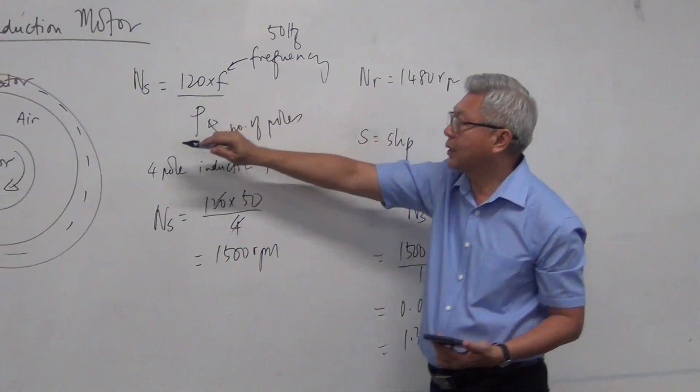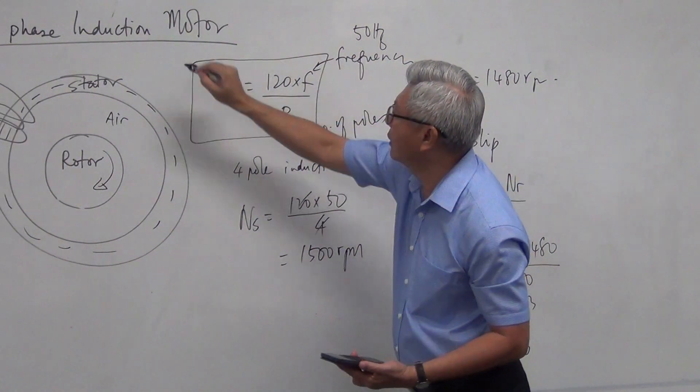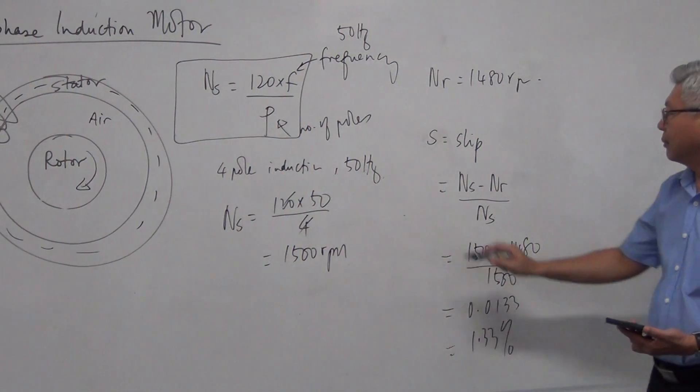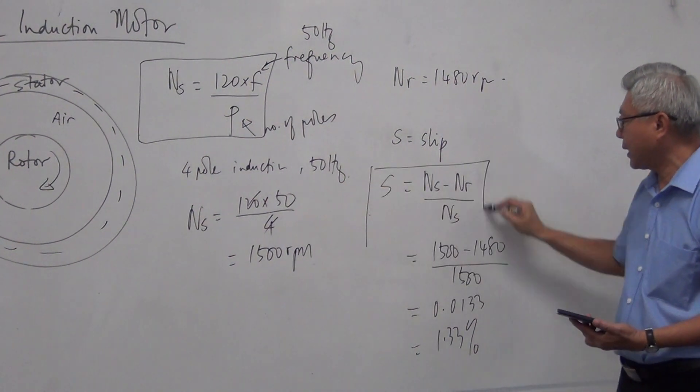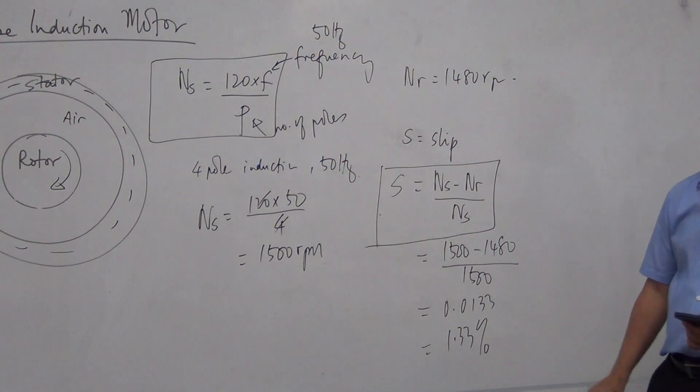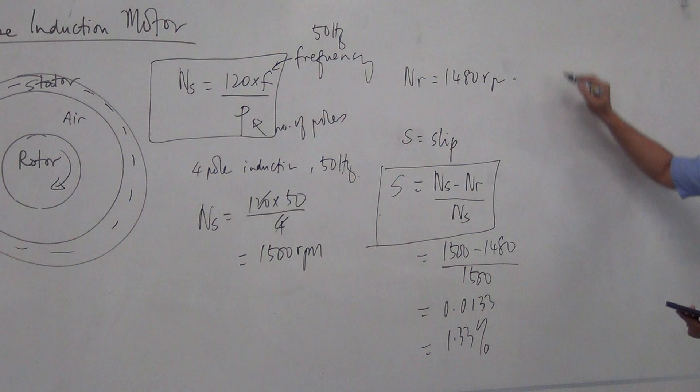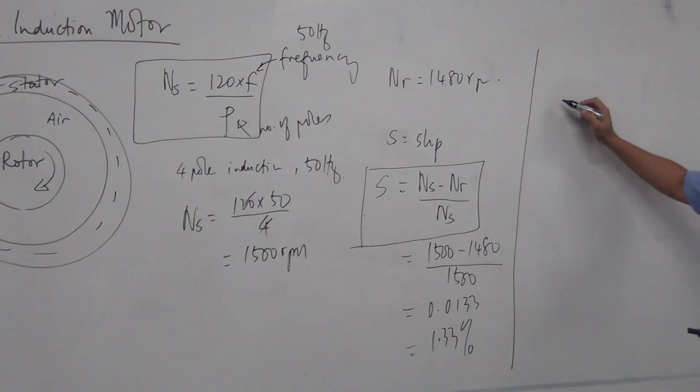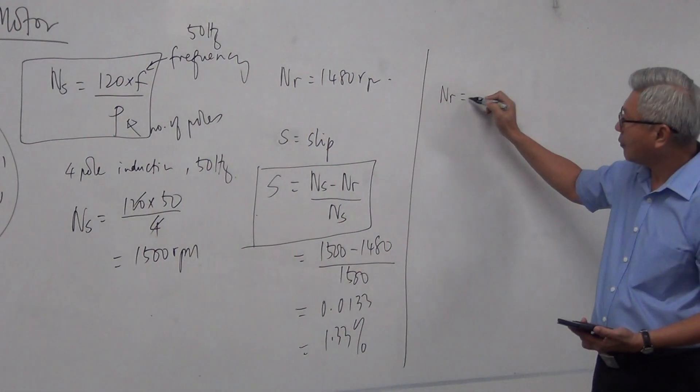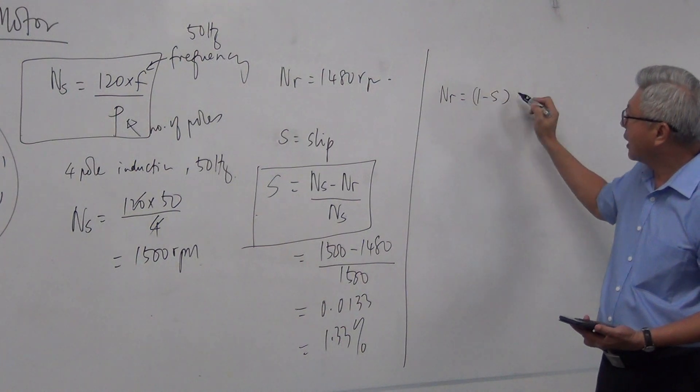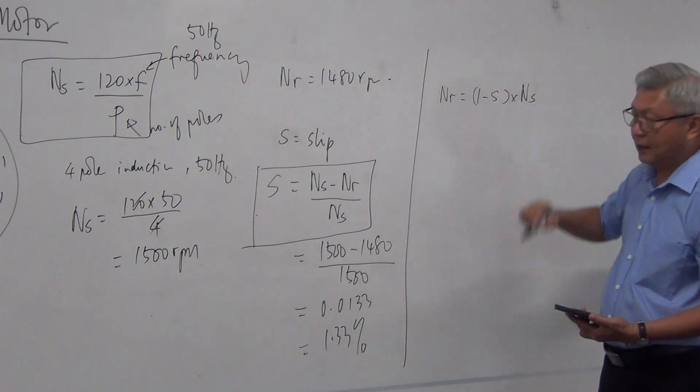So that is synchronous speed. The formula is 120F over P. Slip is equal to NS minus NR over NS. The next formula that I want you all to learn is NR is equal to 1 minus S multiplied by NS.